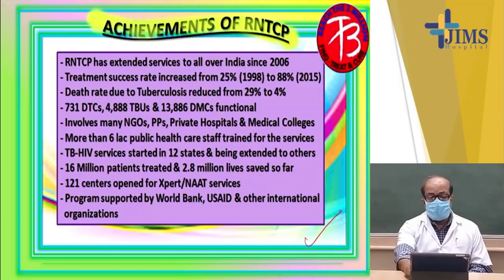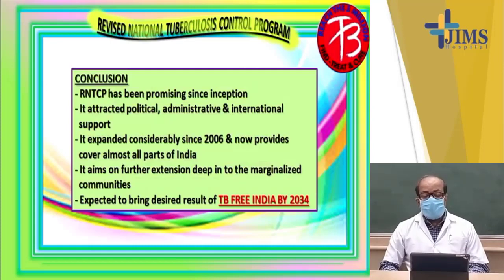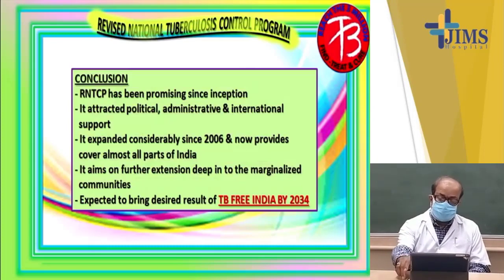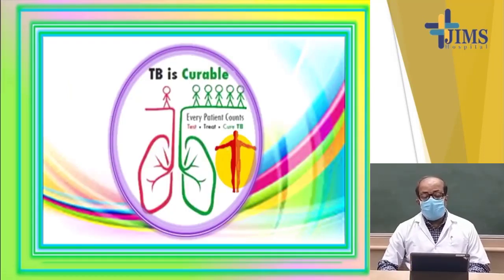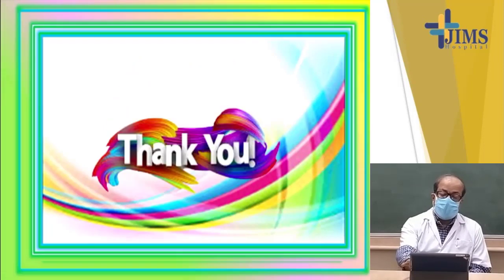To conclude, RNTCP has been promising since inception. It attracted political, administrative, and international support in India. It expanded considerably since 2006 and now provides cover to almost all parts of India. It aims to further provide services to the marginalized part of society and extend deep into marginalized communities, and is expected to bring the desired result of TB-Free India by 2034. To end: TB is curable. We need every patient to count — we have to find them, treat them, and cure them. Thank you very much.